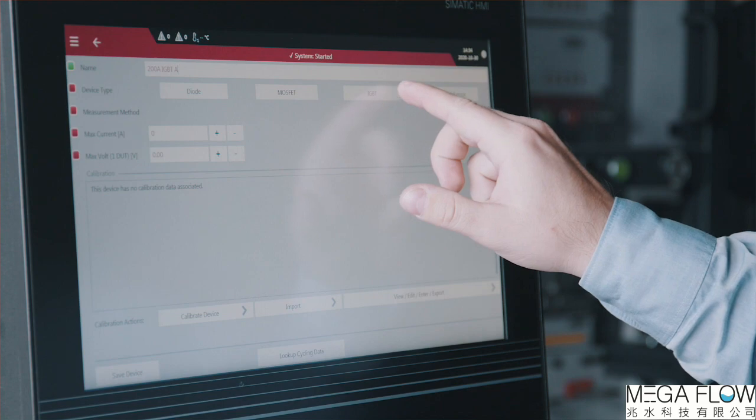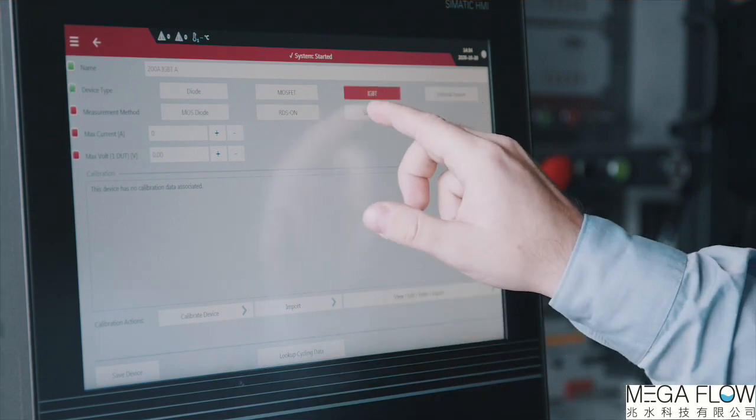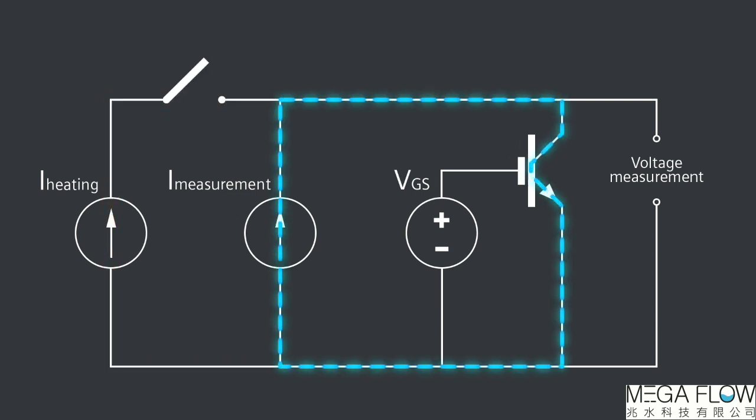First, the measurement mode has to be selected. In the current example, the IGBTs are heated and measured in saturation mode with a constant gate emitter voltage applied to turn on the devices.